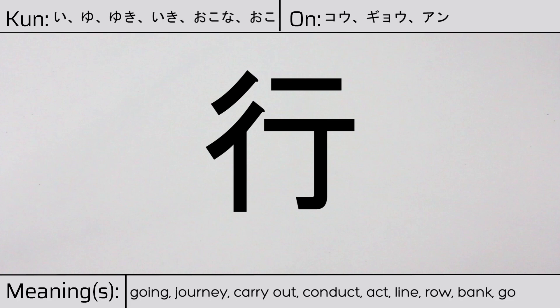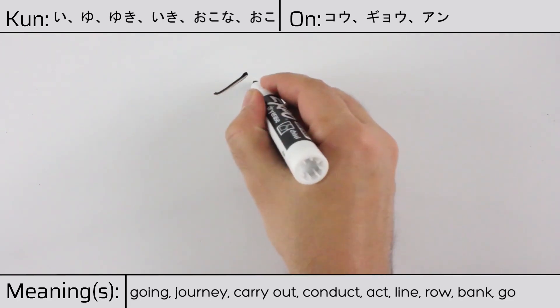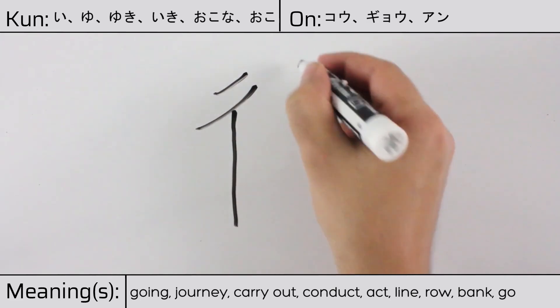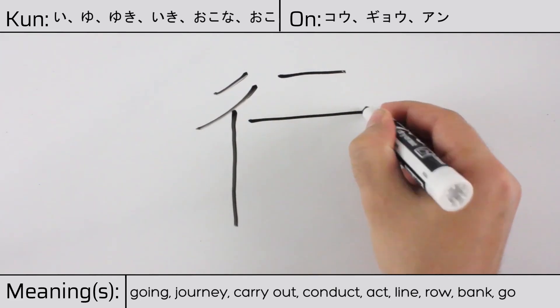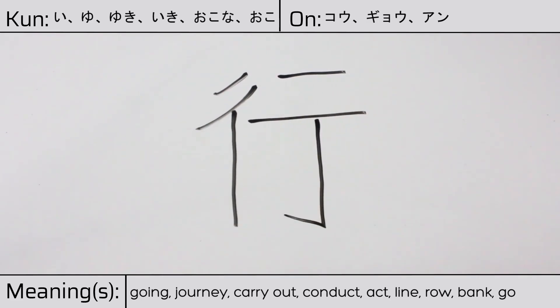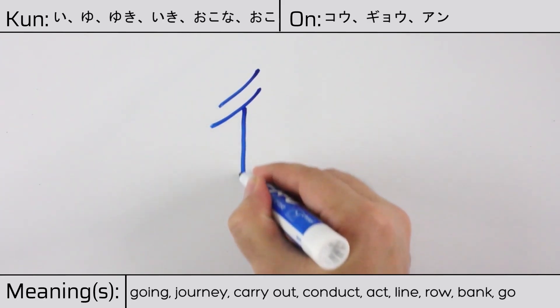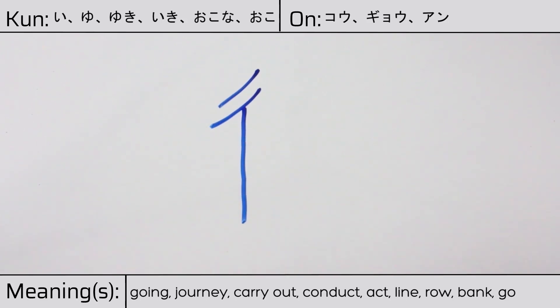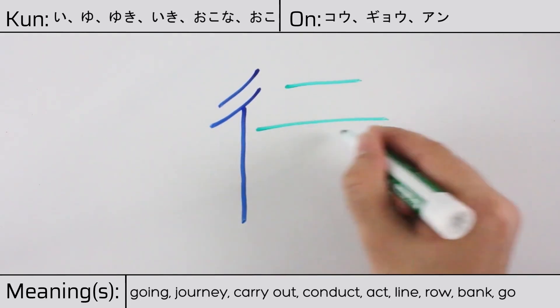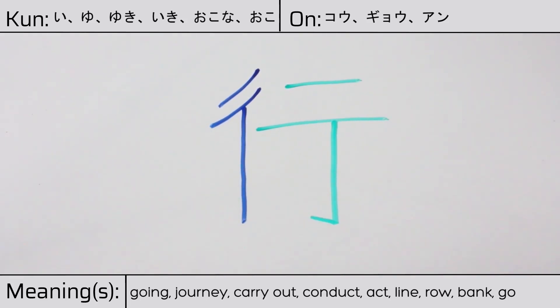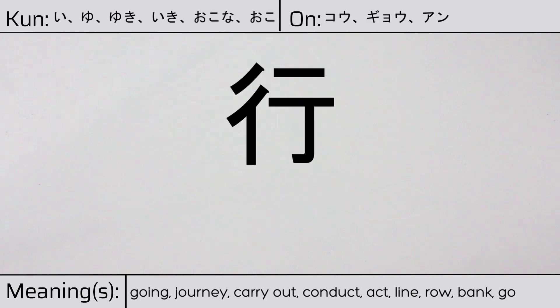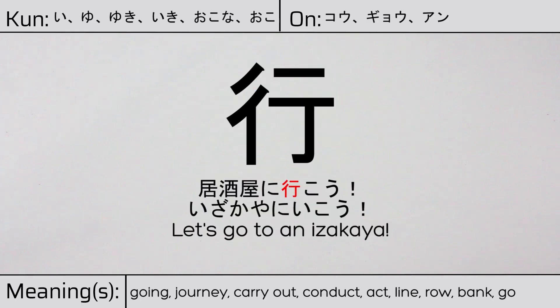Here is the stroke order. This character is made up of the following radicals or parts: gyouninben on the left meaning step, stride, street, to go; followed by kanji ni; and a hook radical at the bottom. Our example sentence is: izakaya ni ikou — Let's go to an izakaya.